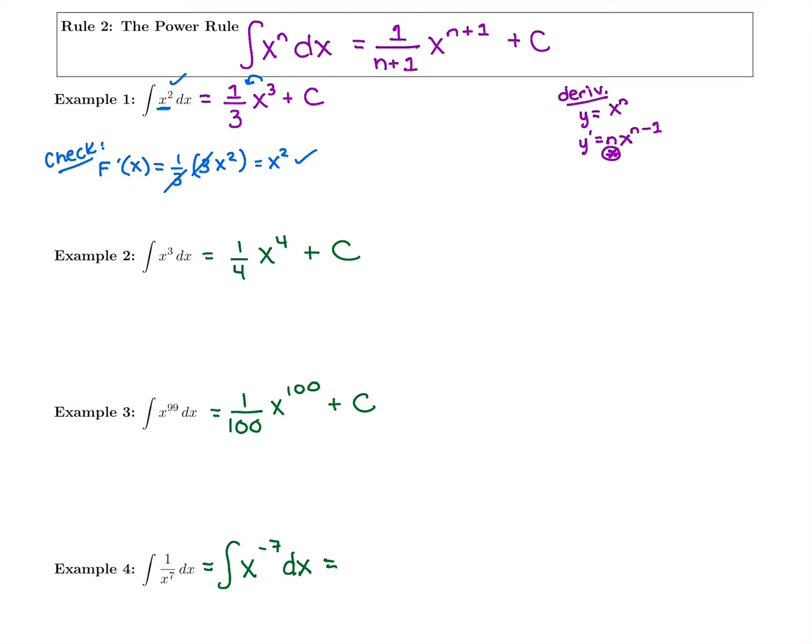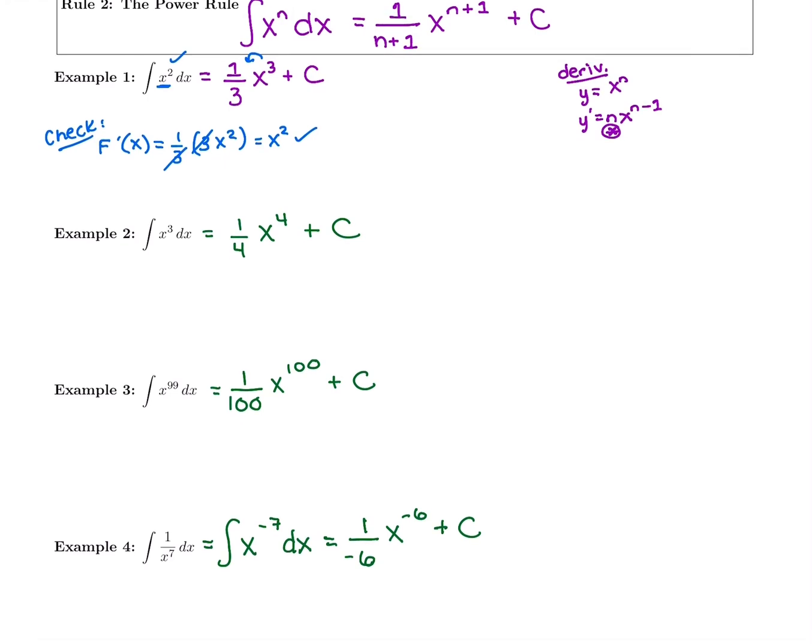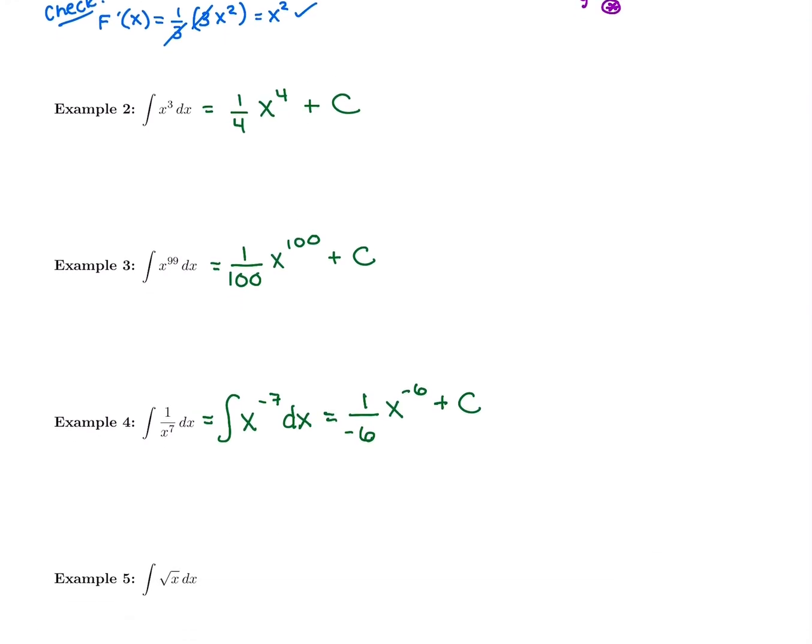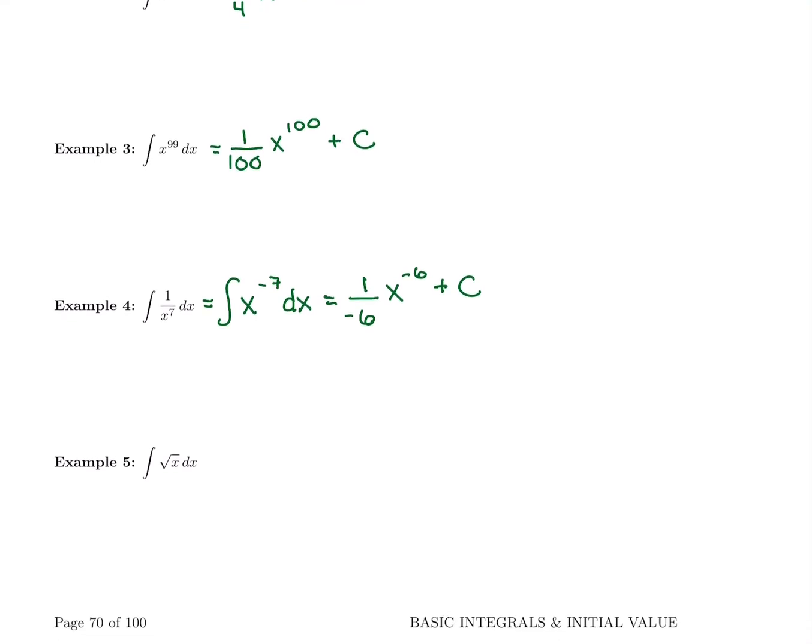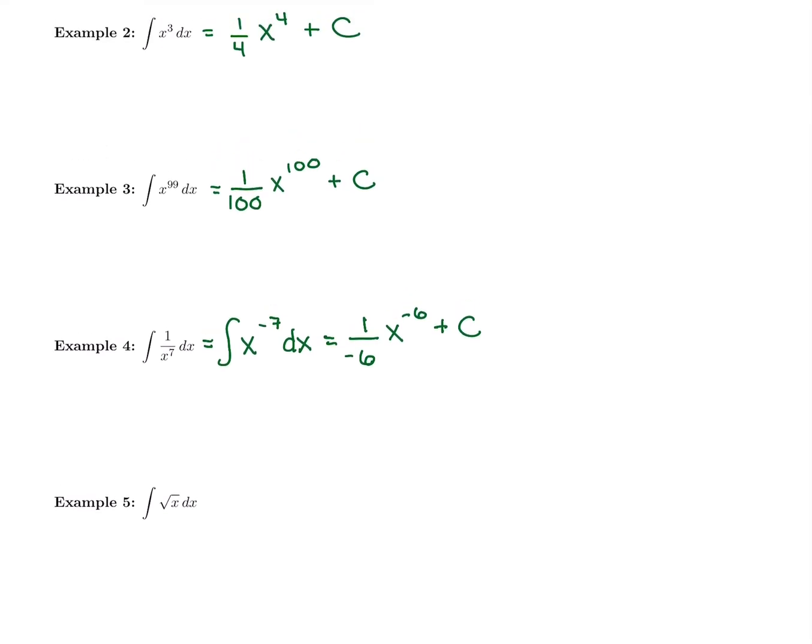Now I can apply this rule though. I have x to the negative 7. Negative 7 plus 1 is negative 6. So I'm going to put negative 6 in the denominator, and negative 6 is my new power. And then I'm going to write plus c. Just make sure you're not writing these integral symbols in part of your answer because we only write that if we have to rewrite a function like we did for that one.